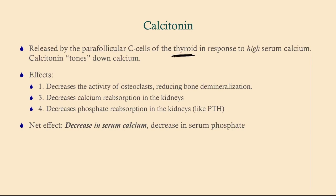Calcitonin is less important. It is released by the parafollicular C cells of the thyroid — not the parathyroids — in response to high serum calcium. A helpful mnemonic: calcitonin 'tones down' calcium. Its effects include decreasing osteoclast activity, increasing osteoblast activity (reducing bone demineralization and increasing mineralization), decreasing calcium reabsorption in the kidneys, and decreasing phosphate reabsorption in the kidneys.